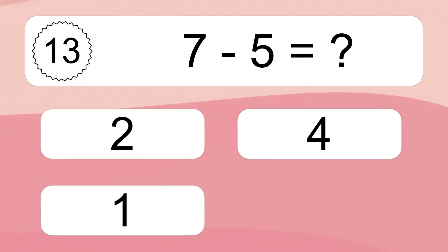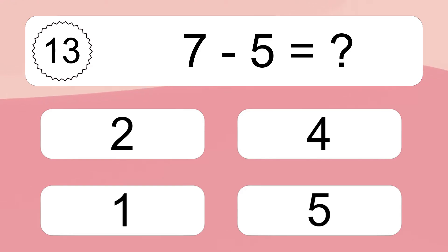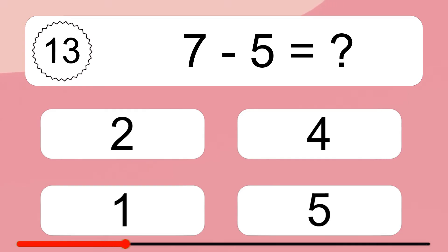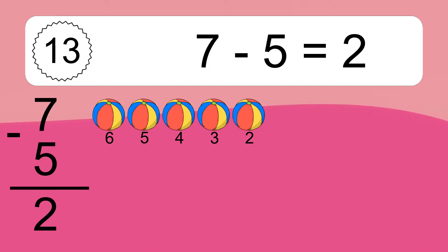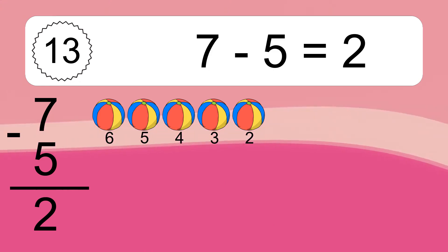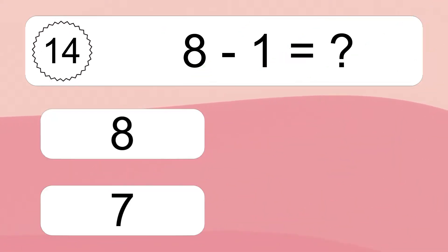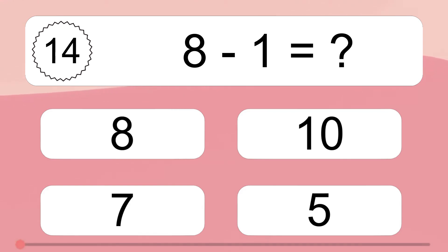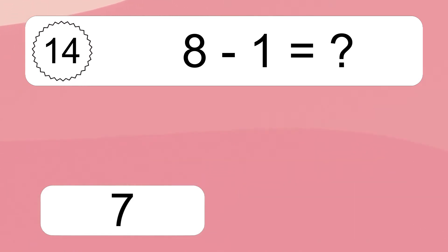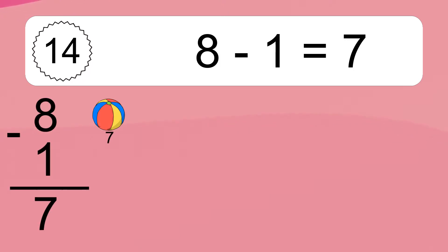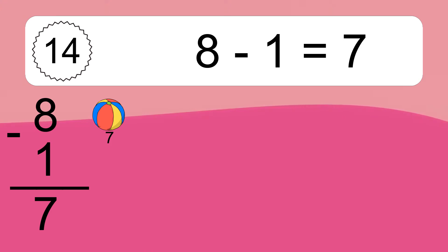7 minus 5 equals what? 7 minus 5 equals 2. Let's count it: 6, 5, 4, 3, 2. 8 minus 1 equals what? 8 minus 1 equals 7. Let's count it: 7.